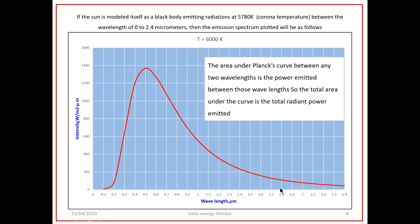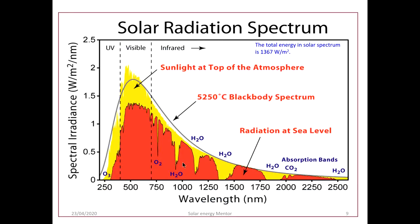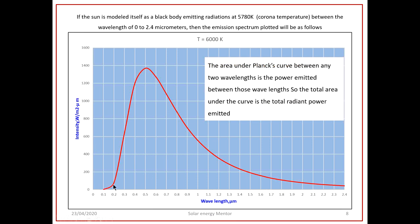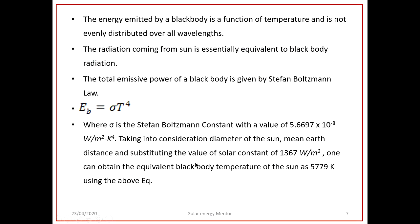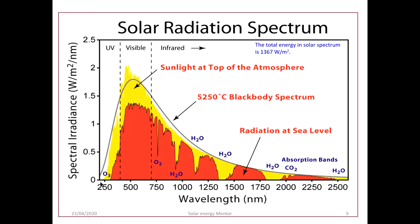Experimentally measured sunlight at the top of the atmosphere fits well to the black body model at 5780 Kelvin. Most practical and experimental readings confirm this modeling, so we can assume the Sun is a black body at 5780 K — the assumption is valid to a great extent.